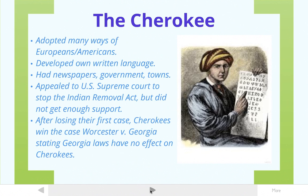One of those tribes was the Cherokees. They hate the law because they had already done everything the United States said they were supposed to do — they adopted many ways of Europeans and Americans, formed their own written language, had their own newspapers, their own government, and their own towns that looked very much like typical American towns. Had you walked into a Cherokee village in the 1830s, you probably wouldn't have noticed the difference from any other village in Georgia. It was very Americanized.